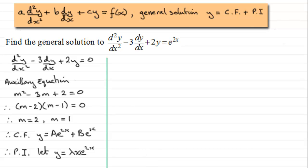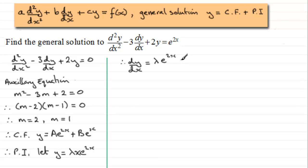From here it's much the same as what we've done in the past — we find dy/dx and d²y/dx², then substitute into our equation to find lambda. For dy/dx, using the product rule on lambda x times e to the power 2x: differentiate lambda x to get lambda, multiply with e to the 2x, then plus lambda x times the differential of e to the 2x, which gives 2 lambda x e to the power 2x.